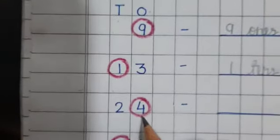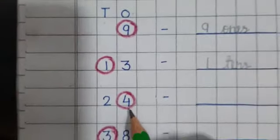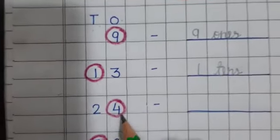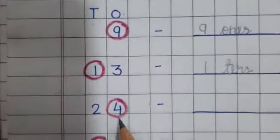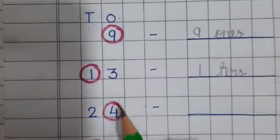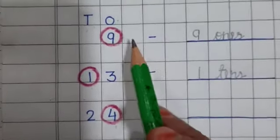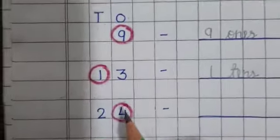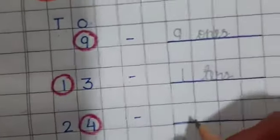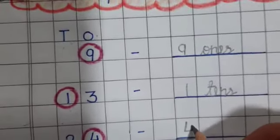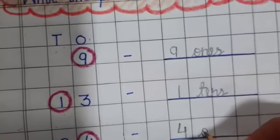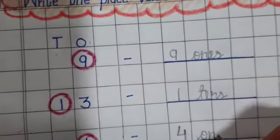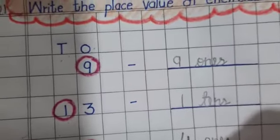Next. Which number is this? 24. Where is the circle? Around the 4. So we will write the place value of number 4. Where is 4? Under the ones place. So we write: 4 ones.